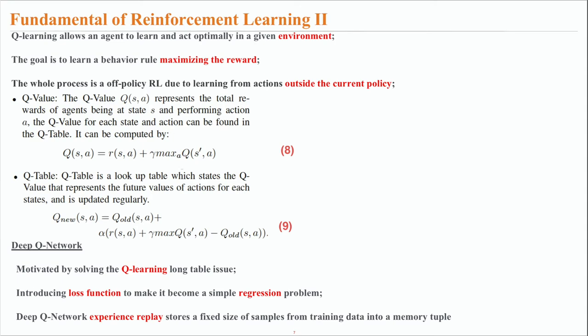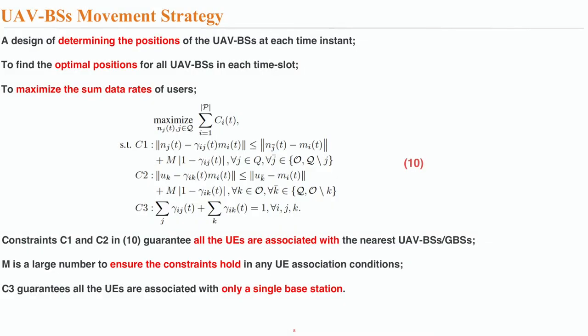However, to solve the scalability issue of Q-learning, Deep Q-Network has introduced a loss function to make it a simple regression problem. Moreover, the experience replay of Deep Q-Network can store a fixed size of samples from training data into a memory table. At this stage, we can introduce the UAV base station movement strategy, which is a design for determining the positions of the UAV base station at each time instant and serves the purpose of finding the optimal positions for all UAV base stations in each time slot.